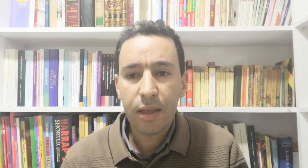The second type of learning is called operant conditioning. This one was developed by B.F. Skinner. Operant conditioning is different from classical conditioning in that it is based on the idea that learners will repeat the same behavior in anticipation of a reward, or they will avoid some behavior in fear of punishment.